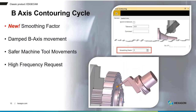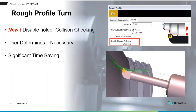For higher-end licenses using the B-axis Contouring cycle, there's a new parameter called Smoothing Factor. This produces more refined code and, more importantly, prevents the B-axis from moving too erratically on the machine — it dampens the movements. We'll see this better in the demonstration.